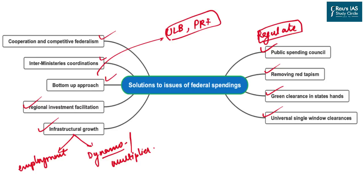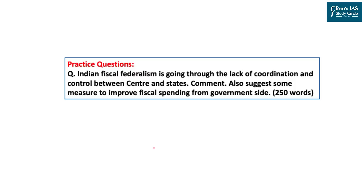Lastly, we should focus more on infrastructure growth because it creates two important effects: first, employment in the country, and second, a dynamo or multiplier effect to boost the economy further. Given all these initiatives, if taken into practice, India will be able to restrict its public spending and attract more private investors for economic recovery. I will now leave you with an important practice question — read it carefully and try to answer it in under 250 words.